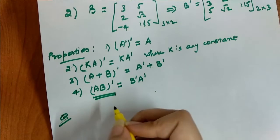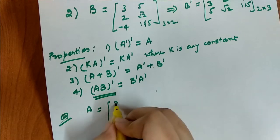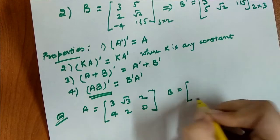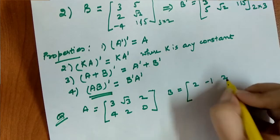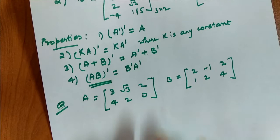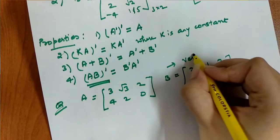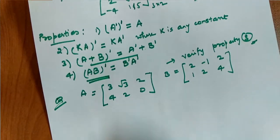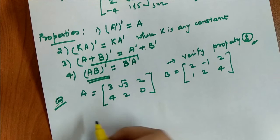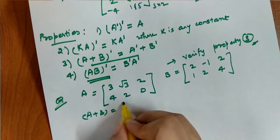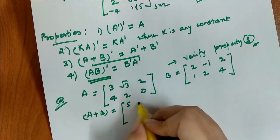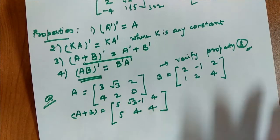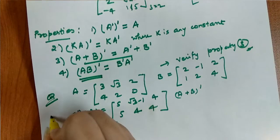Let's consider matrix A with elements [3, root 3, 2; 4, 2, 0] and matrix B with elements [2, -1, 2; 1, 2, 4]. We have to verify property number 3, which states that (A + B)^T = A^T + B^T. First, we compute A plus B and then take its transpose for the LHS.